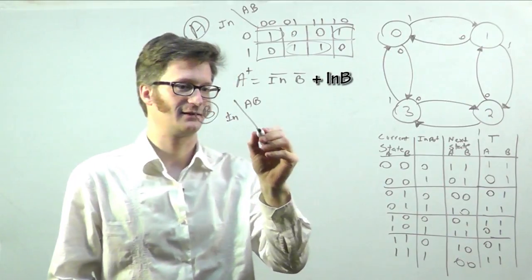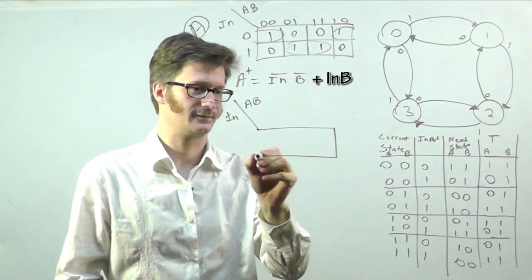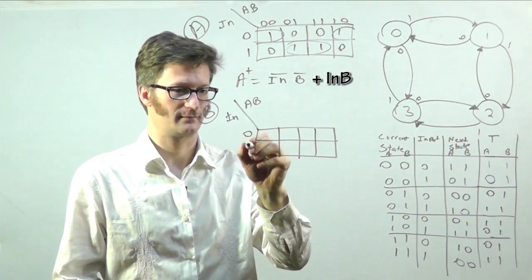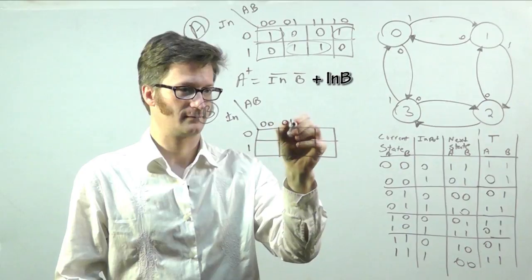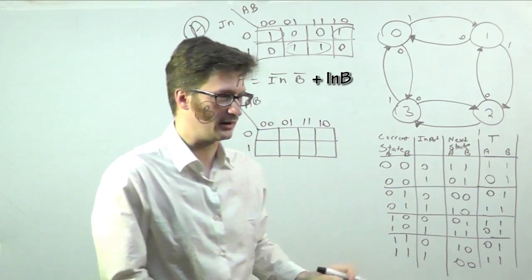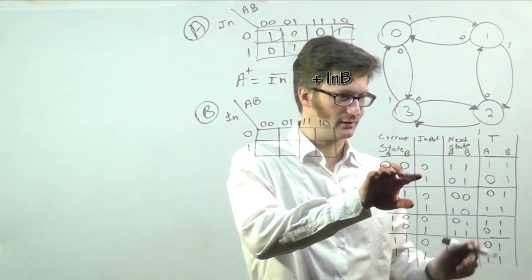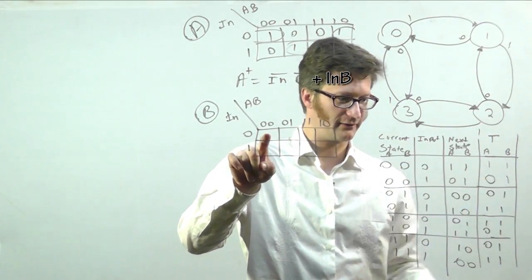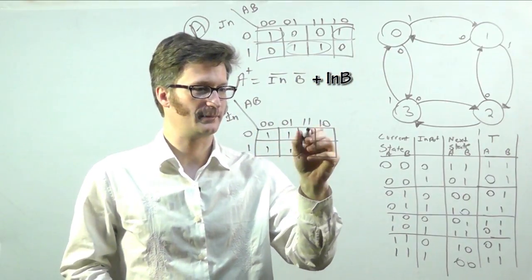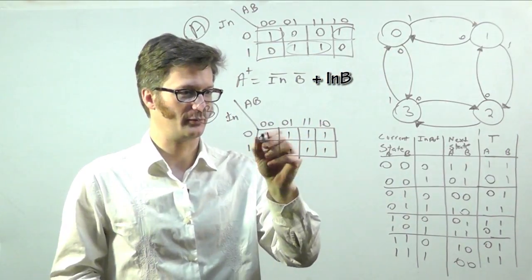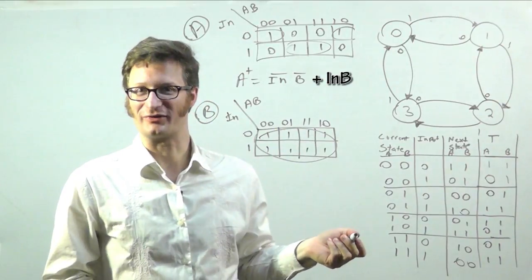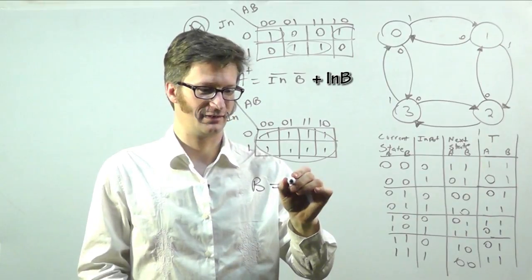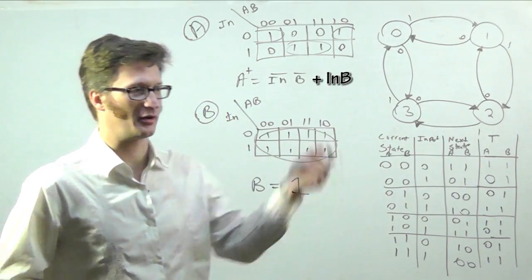And I'm going to create another one for B now. That's A for the next state. Okay. So here, this box corresponds to, actually, it looks like every single one of them is a one. So that's always. So B equals a one or true or wire it high.